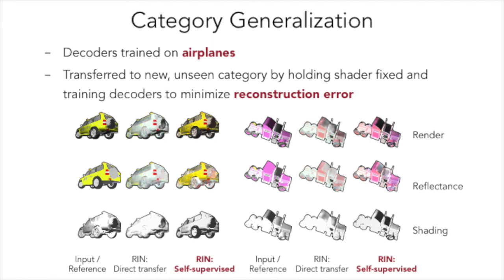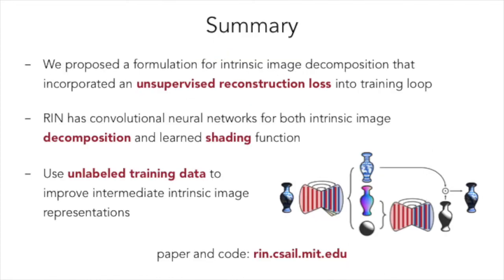Before the self-supervision, the reflectance predictions are washed out because most of the airplanes in the training set are white. This approach is useful because we might not be able to construct a ground truth intrinsic image dataset for the types of objects we actually care about. But through self-supervised learning, our model can transfer its intrinsic image representations to new types of objects using only raw unlabeled data.